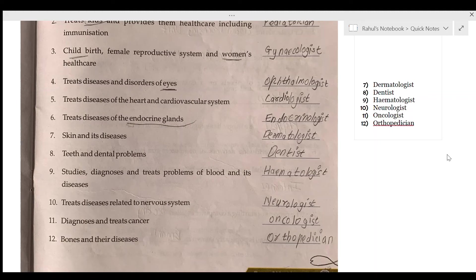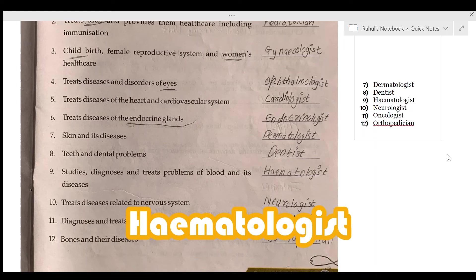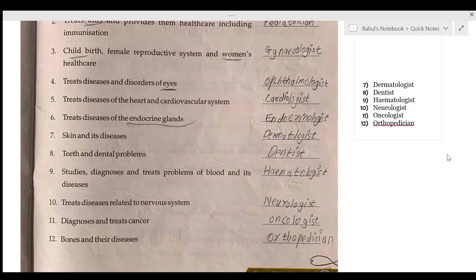Teeth and dental problems are treated by a dentist — very easy. The doctor who studies, diagnoses, and treats problems of the blood and its diseases is called a hematologist.